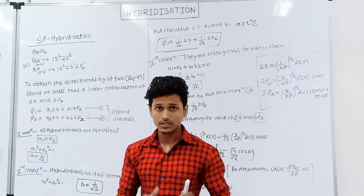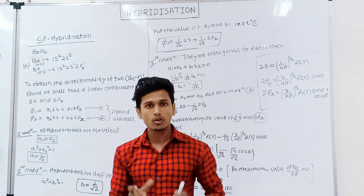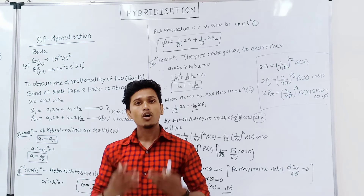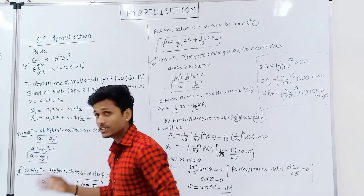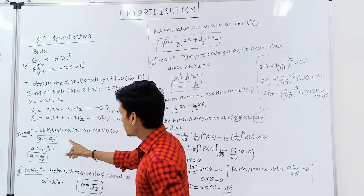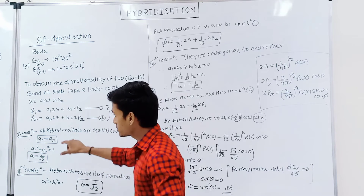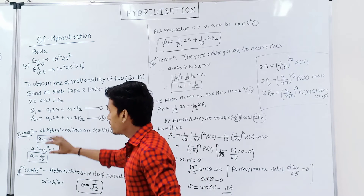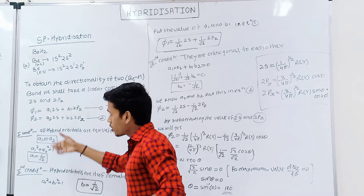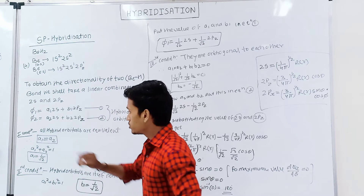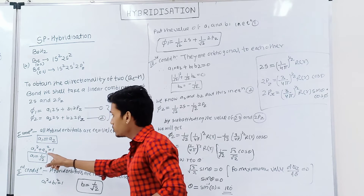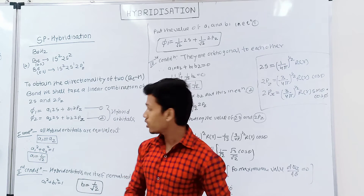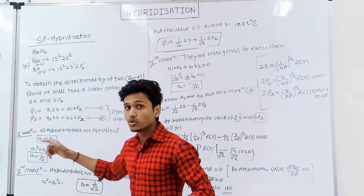There are three conditions: first, both hybrid orbitals are equivalent; second, normalization; and third, orthogonal. Applying the first condition, a1 becomes equal to a2. Taking the normalization of phi1 and phi2, we get a1 squared plus a2 squared equal to 1. From here we can find the value of a1, since a1 equals a2.